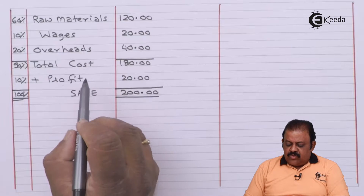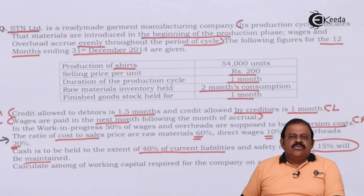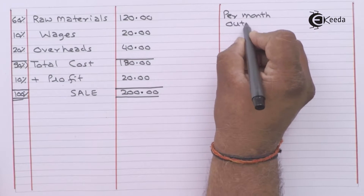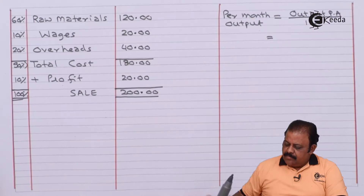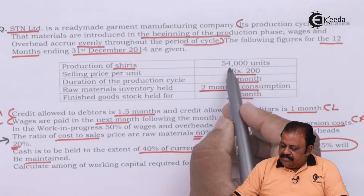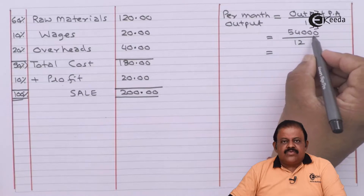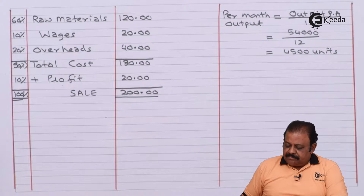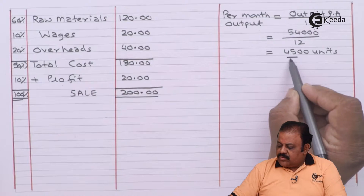So we have the cost structure clear: raw material, wages, overheads, total cost, profit, and sales. Here most of the information we have is on a monthly basis, so we will try to find out the monthly cost of business. Per month output equals output per annum divided by 12. Output per annum is 54,000 shirts, so per month output is 4,500 units per month. Now we have per-unit cost; we will find out per-month cost by considering these 4,500 units.